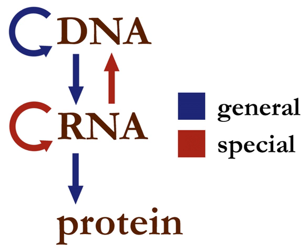In the sense that DNA replication must occur if genetic material is to be provided for the progeny of any cell, whether somatic or reproductive, the copying from DNA to DNA is arguably the fundamental step in the central dogma.